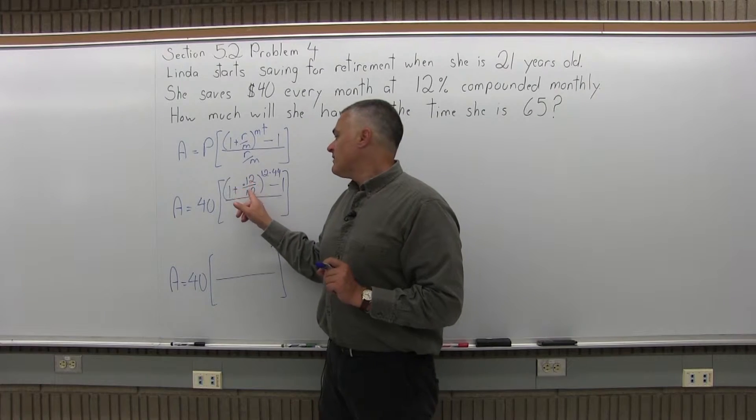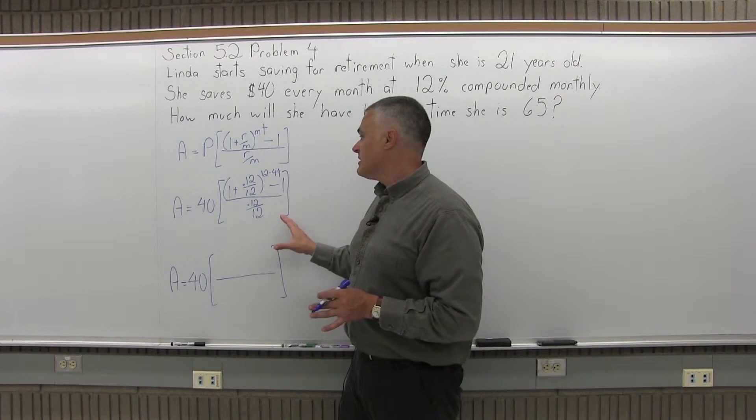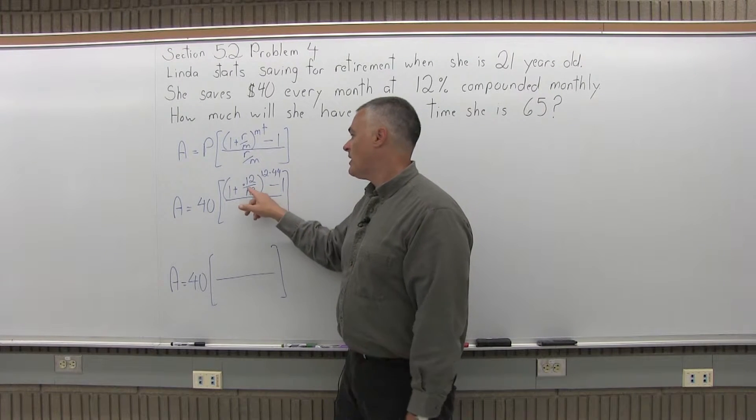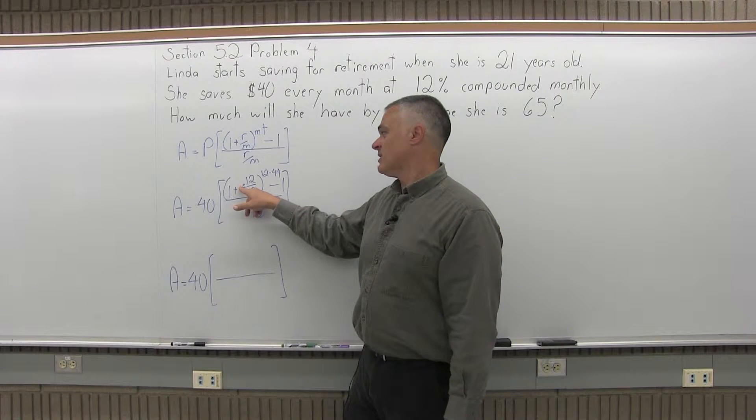1 plus 0.12 over 12. The 0.12 divided by 12 is 0.01. It can be done on a calculator easily enough, 0.12 divided by 12. But I know 12 over 12 is 1. And it's not 12 over 12, it's a 1, and I have to adjust for the decimal.